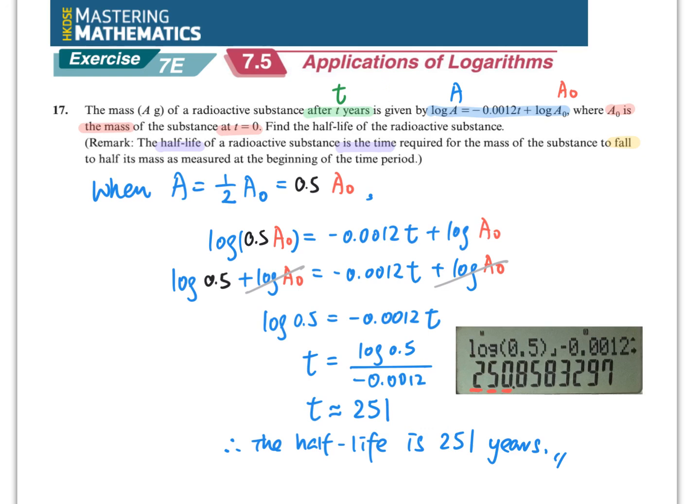不過大家留意,我們不可以硬在這裡加個years在後面,因為t本身是不包那個名數years的。那怎樣才是最合理的表達呢?就是,你就這樣寫回,therefore the half-life is 251 years。